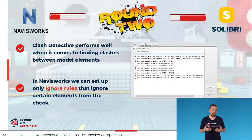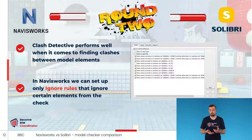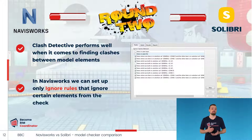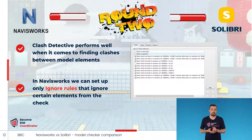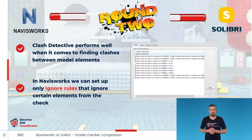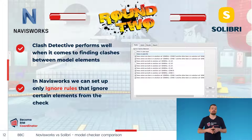Navisworks performs well when it comes to checking geometrical collisions. First, we create groups of elements that we want to test using the Find Item tool, where we build the necessary filters. Then we usually save the filtered element groups as so-called search sets. Next, in the Clash Detective tool, we build appropriate clash tests that use these search sets to check for clashes between various model objects. You can also set up rules in Navisworks via the Rules tab.